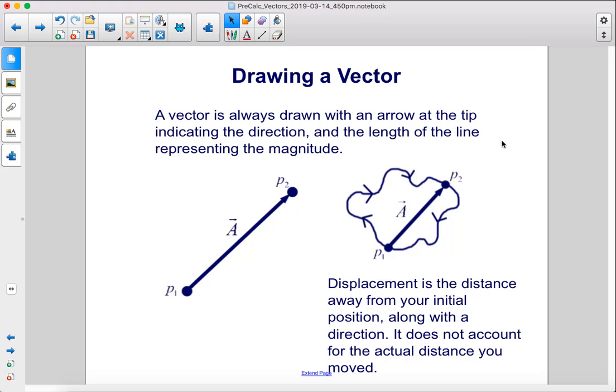A vector is always drawn with an arrow at the tip indicating the direction, and the length of the line representing the magnitude. Displacement is the distance away from your initial position along with the direction. It does not account for the actual distance you moved.